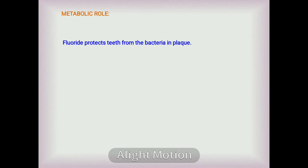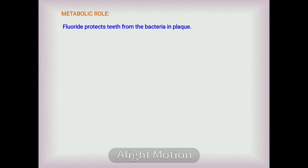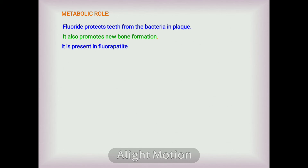Fluoride protects teeth from bacteria in plaque and also promotes new bone formation. It is present in fluorapatite, which makes the bone resistant to osteoporosis and teeth resistant to dental caries. The application of fluoride makes a layer of fluorapatite on the enamel, protecting it from decay.